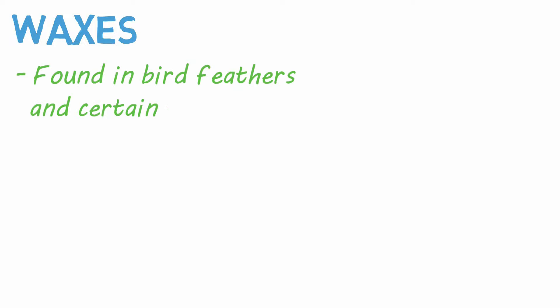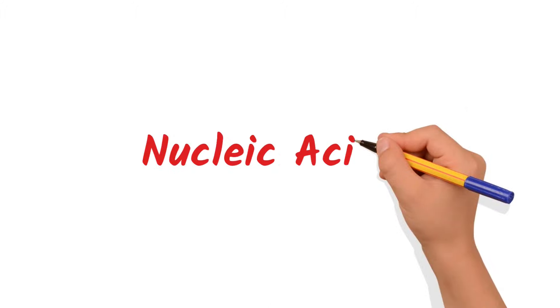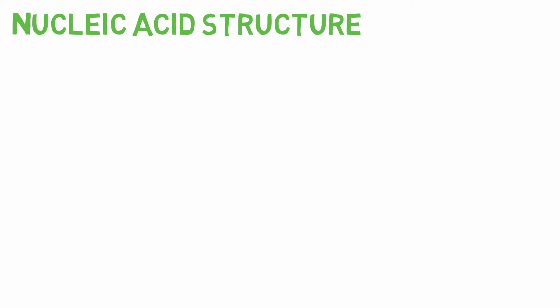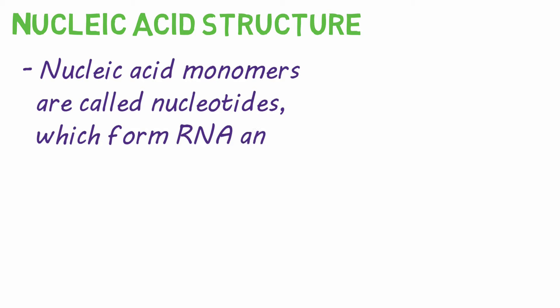Finally, let's not forget about waxes. Waxes have a variety of unique structures and are found in the feathers of some birds and leaf structures of many plants — this is why water beads up and runs off certain plants. And last but certainly not least, nucleic acids. I'm going to introduce the basic structure of nucleic acids first and then talk about the variations for structure and how that relates to their function.